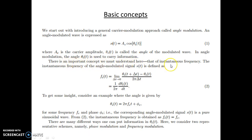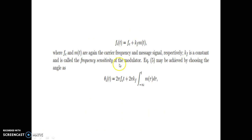An important concept is that the instantaneous frequency of the carrier signal is changed in accordance with the message signal. The angle modulated signal S(t) is defined using differentiation of the angle with respect to time. For example, if frequency FC and phase are changed in angle modulation, the instantaneous frequency F_i(t) is changed in accordance with the message signal M(t).